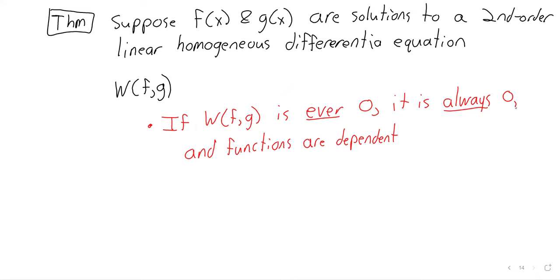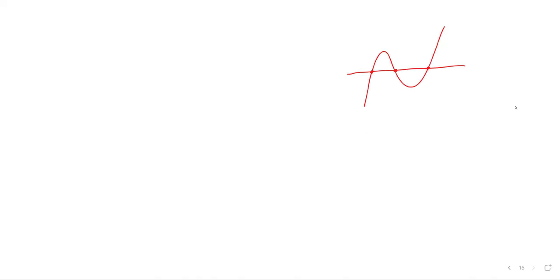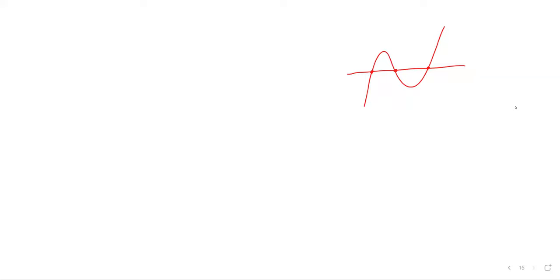It doesn't really make sense to ask if a function is zero. A function, maybe it's sometimes zero, but other times it isn't. What this theorem is saying is that a Wronskian cannot look like this. If the Wronskian is ever zero, then in fact the Wronskian is the constant zero function.